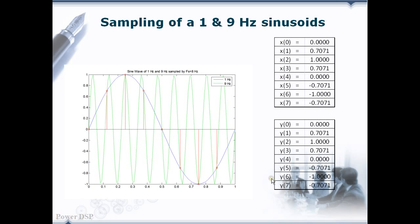In this slide, we can see both the 1 Hz and 9 Hz sine waves. Both are sampled with the same sampling frequency of 8 Hz. The samples that we get from both of these signals are the same. We can readily see in these tables, x of n is taken from 1 Hz and y of n is taken from 9 Hz.